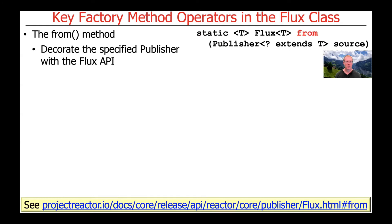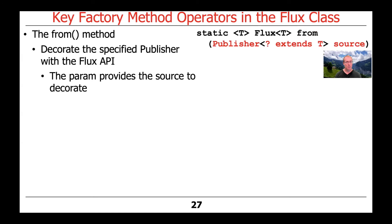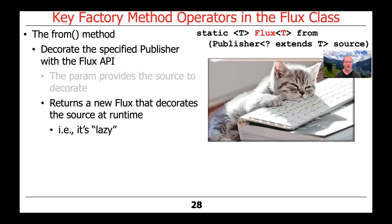The fourth and final factory method we're going to talk about from Flux is the from method. This is used to decorate the specified publisher with the Flux API. The parameter passed here is the source that we want to decorate by encapsulating it within a Flux, and what this returns is a new Flux that does the decoration at runtime. So unlike just, fromIterable, and fromArray, which are all eager operations, the from operator is lazy — meaning the publisher is evaluated at runtime.